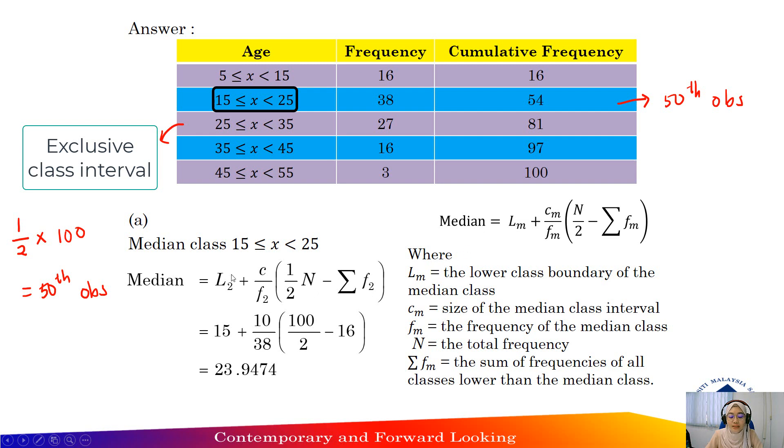So Lm, the lower boundary, is 15 plus class size. Class size C equals 25 minus 15, so you get 10 for the class.